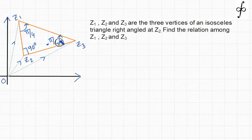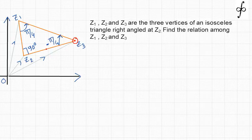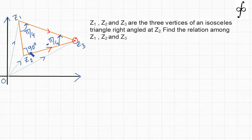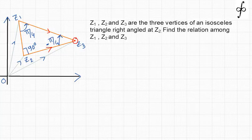I have assigned the direction of rotation here to be clockwise and here to be anticlockwise. Let us proceed by first taking Z3 to be the pivotal point. If we take Z3 as the pivotal point, we assign the two vectors as merging at the pivotal point and apply rotation about Z3.